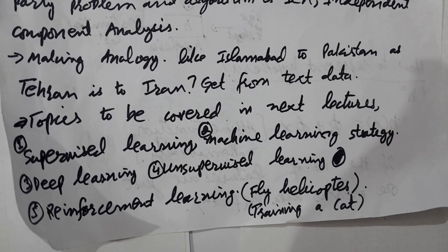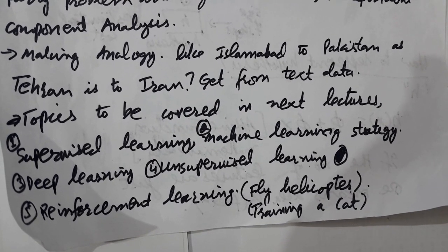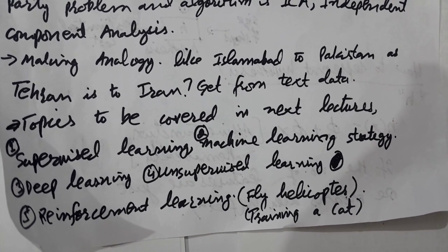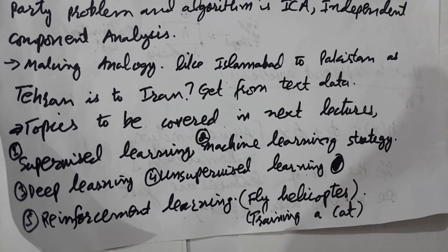For reinforcement learning, a simple example: if you are going to train a cat for some task, whenever the cat performs the task you provide her with some food — that is the reward. If the cat is not completing the task, you will snub her or say bad words like 'you are a bad cat.' With the passage of time, the cat learns that whenever she performs the task, she is rewarded with food.